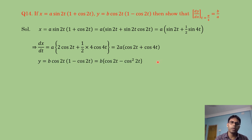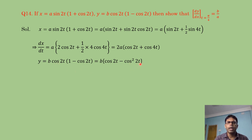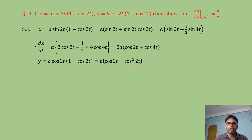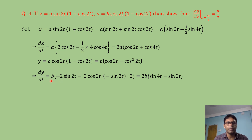For y = b·cos2t·(1−cos2t), we expand: y = b[cos2t − cos²2t]. We differentiate directly: dy/dt = b[−2·sin2t − 2·cos2t·(−sin2t)·2].